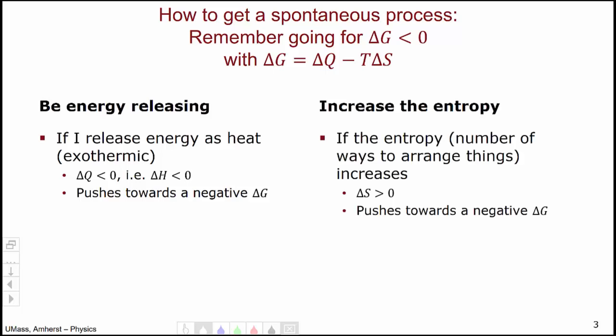The other way is to increase the entropy. If the entropy delta S increases, then because of this negative sign, the Gibbs free energy change delta G will actually be pushed negative. So, an increase in entropy, i.e., the number of ways to arrange things, will push towards a negative change in Gibbs free energy.